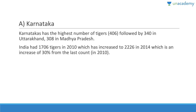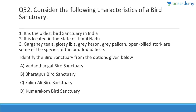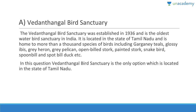Question fifty-two: Consider the characteristics of a bird sanctuary — it is the oldest bird sanctuary in India and is located in Tamil Nadu. The answer is Vedanthangal Bird Sanctuary, established in 1986. It is the oldest water bird sanctuary in India, located in Tamil Nadu. Species found here include garganey teals, glossy ibis, gray heron, gray pelican, and open-billed stork. It is the only option located in Tamil Nadu.